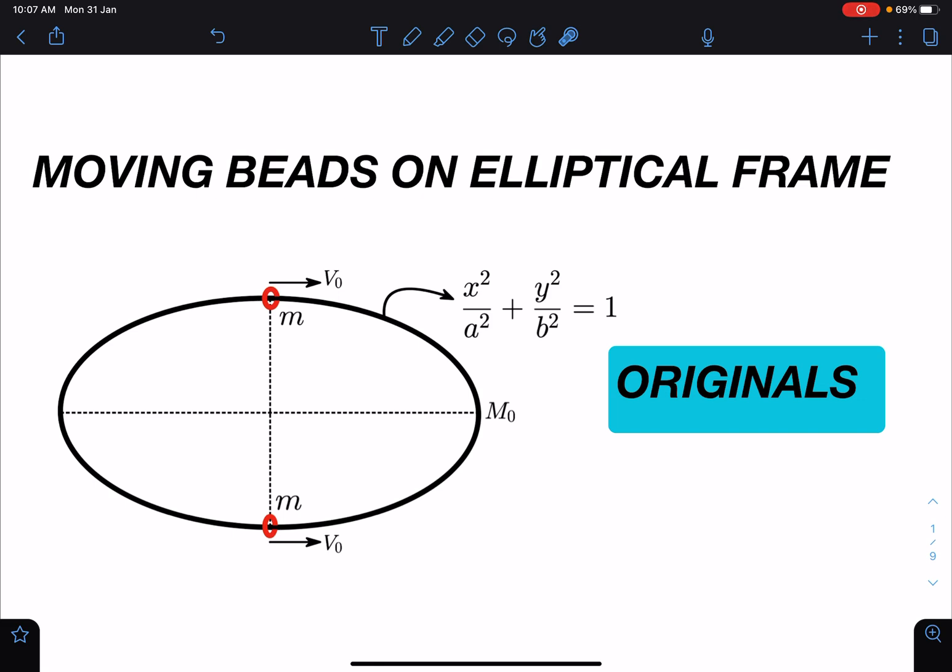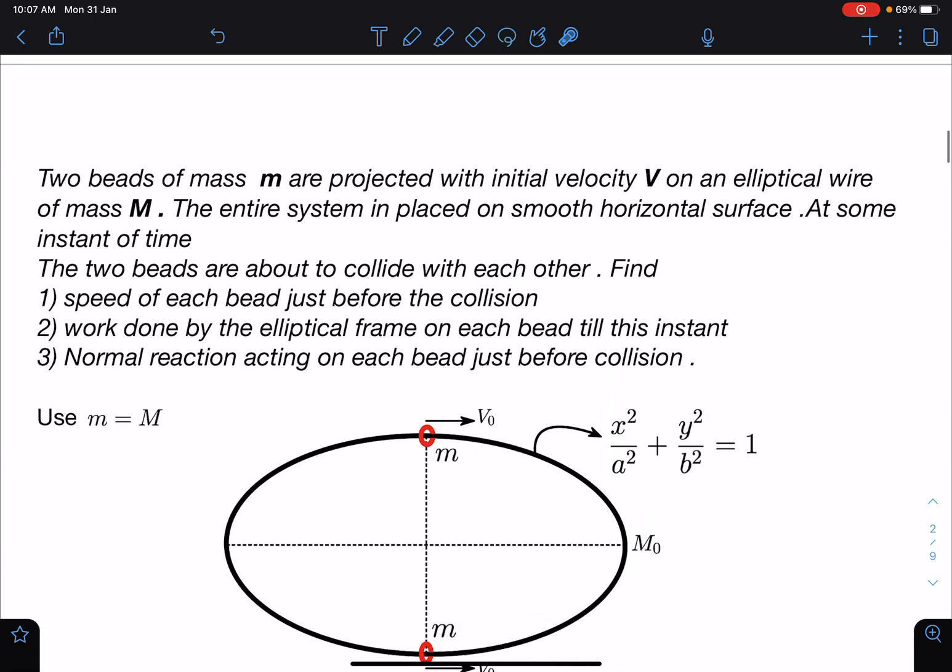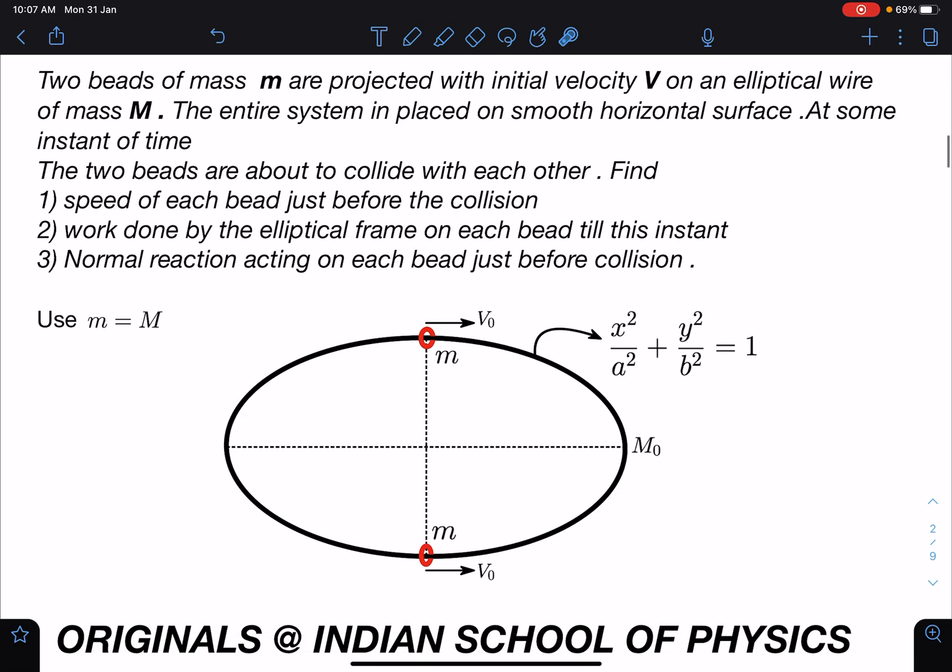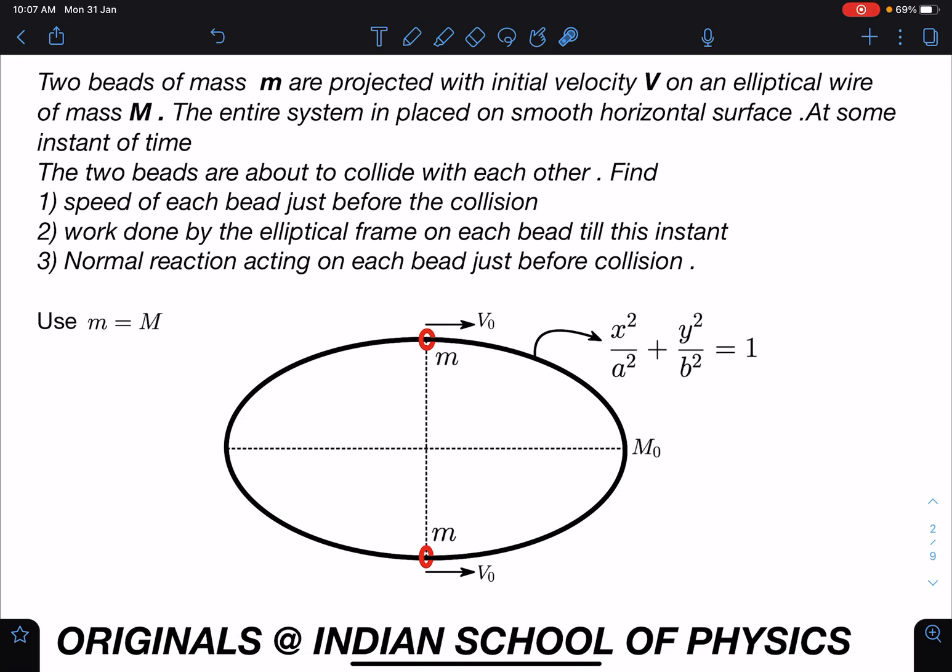It is moving beads on an elliptical frame. Here is the problem statement: two beads of mass small m are projected with initial velocity v naught on an elliptical wire of mass capital M. The entire system is placed on a smooth horizontal surface.